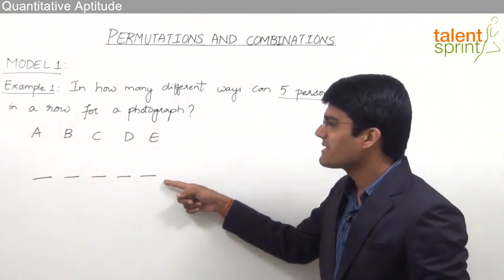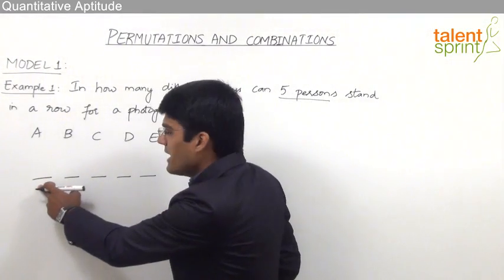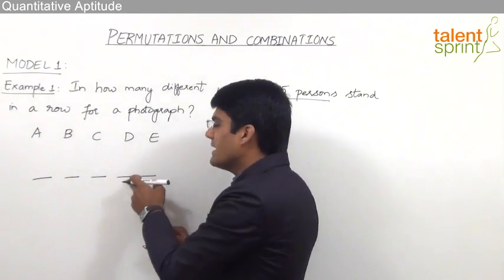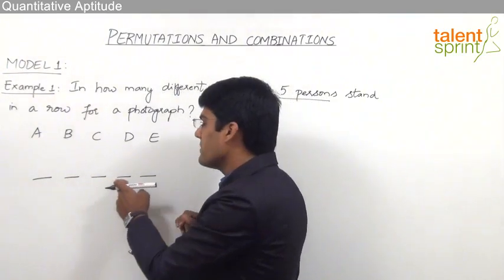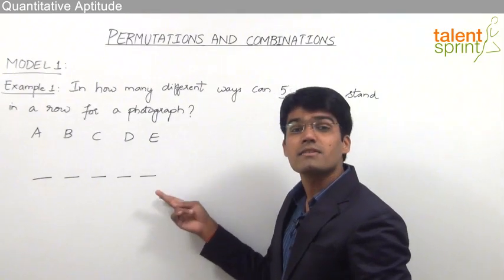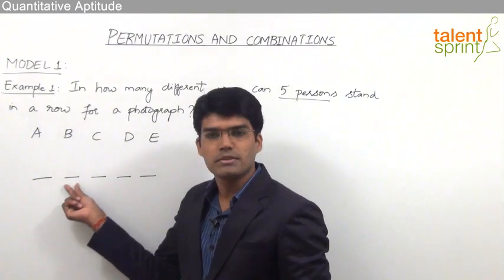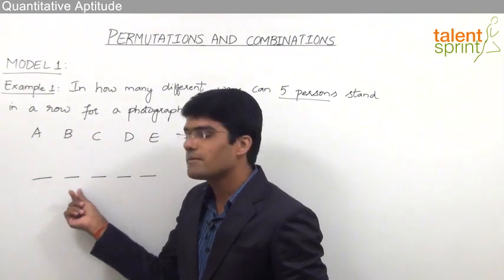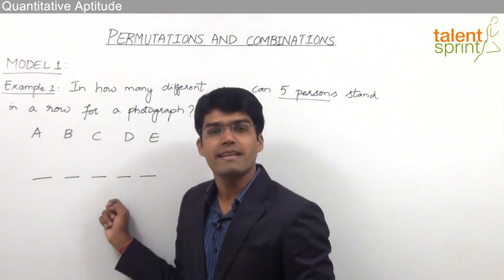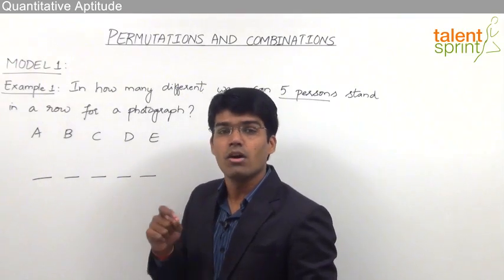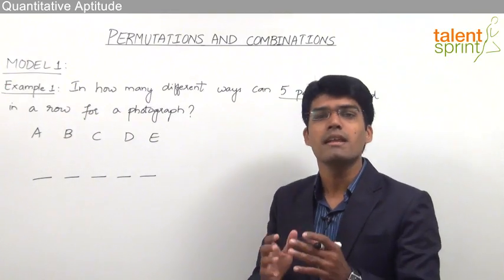Now, if the first position is taken by A and second by B, that is one way the photograph can be taken. But when B takes the first position and A takes the second, that comes out to be a second way. That means when A and B interchange their positions, though the persons remain the same, the photograph is considered different because the order in which the persons are standing has changed. So very clearly in this question, the order is important, and hence this is an arrangement-based question — nothing but a permutation.